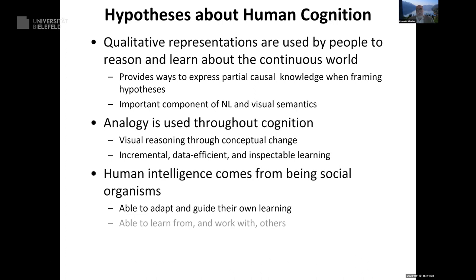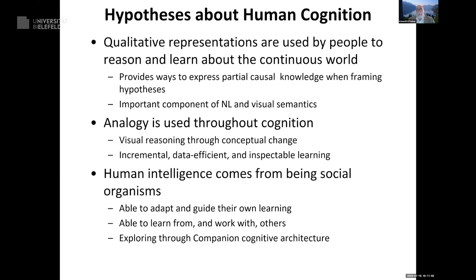Third, human intelligence comes from being social organisms. To participate in a social interaction you have to be an agent — most AI systems today aren't really agents in the sense Tomasello uses the term. They have to be able to learn from and work with others. We're exploring this through the Companion cognitive architecture, which underlies a lot of the experiments I'll show today. But I won't talk too much about it — it's background compared to the main ideas about qualitative representations and analogy.